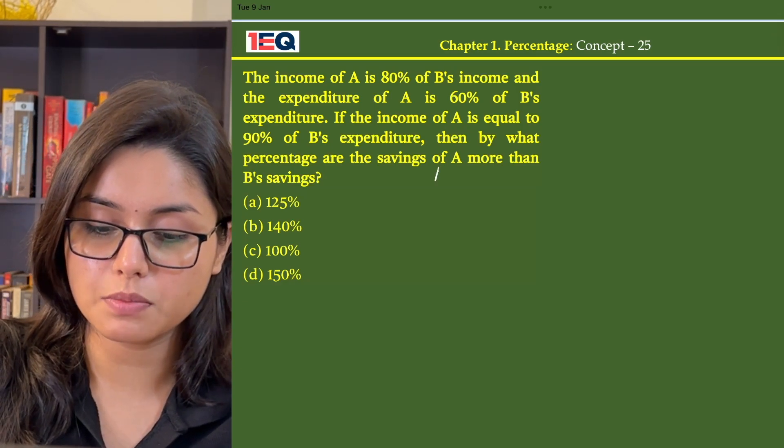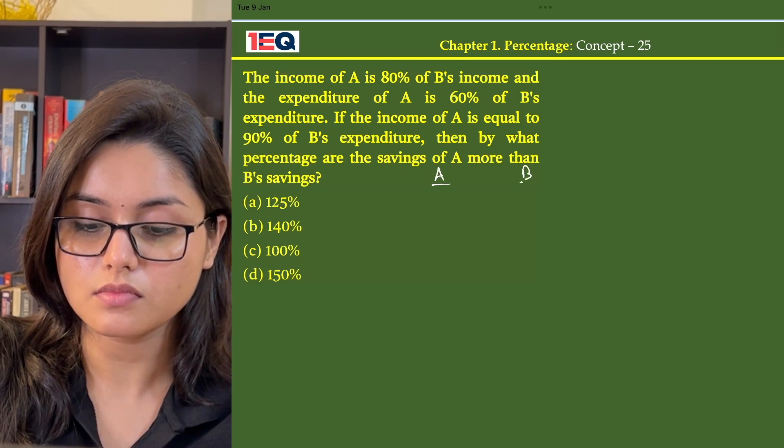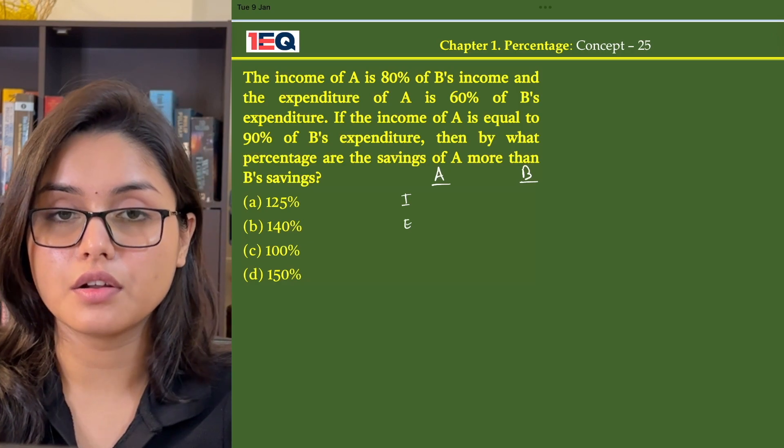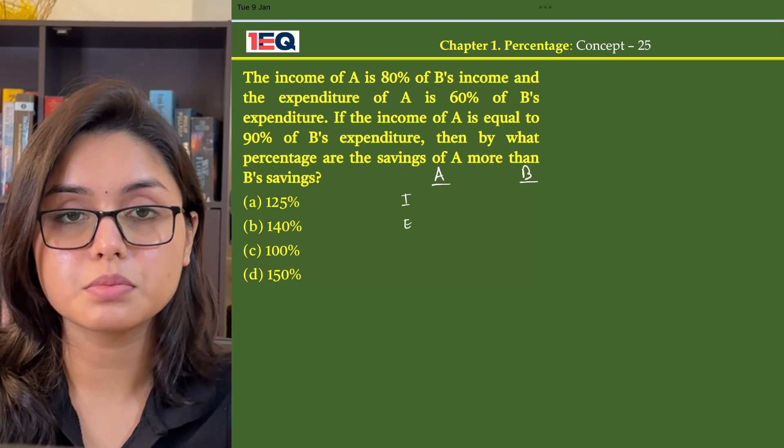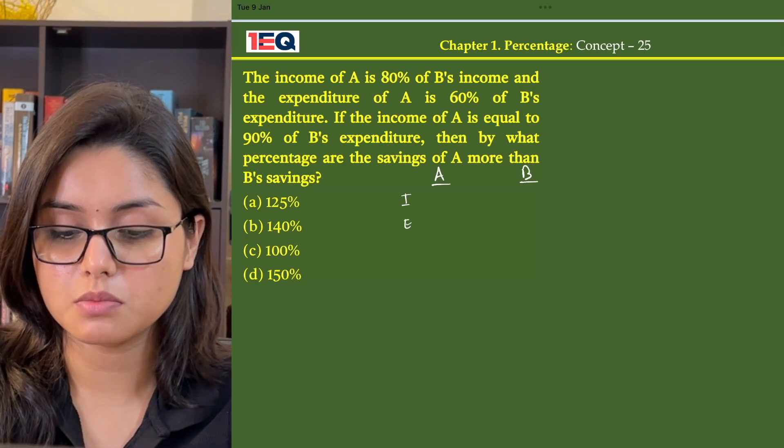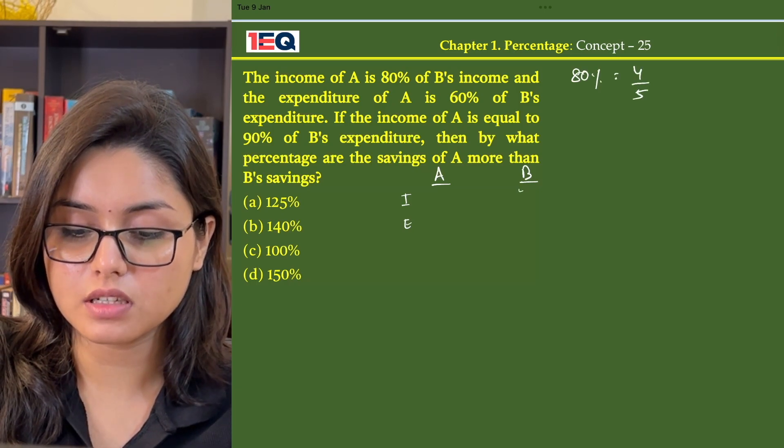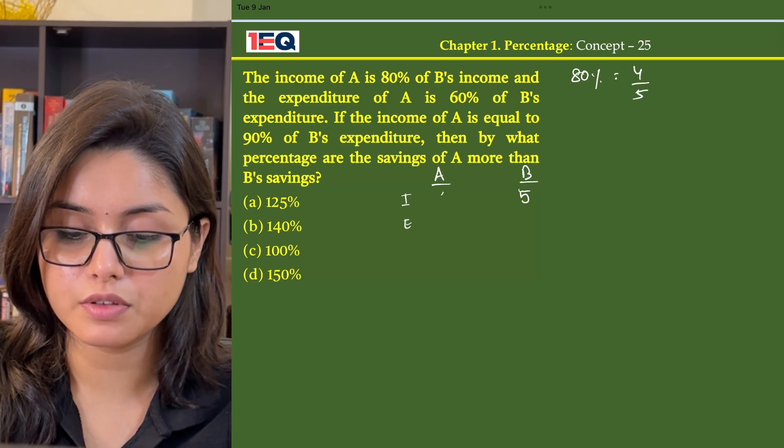From this question we know that there are two people, A and B, with their incomes and expenses. The income of A is 80% of B's income, which means 80% equals 4 by 5. So if B's income is 5, A's income will be 4.